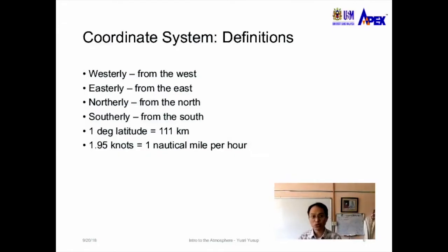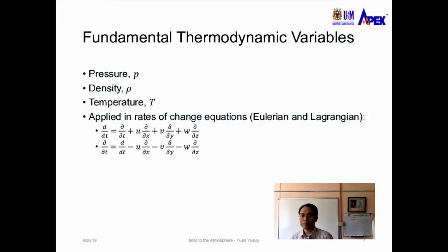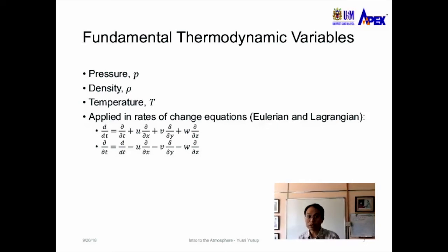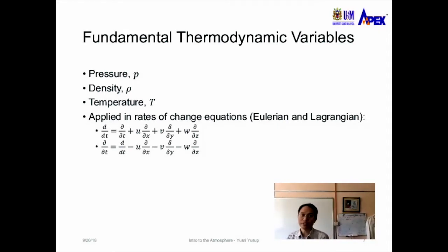Another constant to note is 1.95 knots, where knots is a unit of velocity equal to one nautical mile per hour. The fundamental thermodynamic variables of the atmosphere are pressure, density, and temperature.